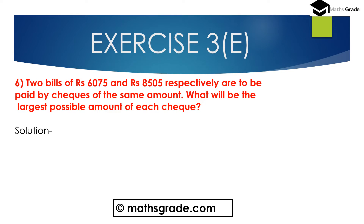Question number 6: Two bills of 6075 rupees and 8505 rupees respectively are to be paid by checks of the same amount. What will be the largest possible amount of each check? So we have to find out the largest possible amount, that is, the highest common factor of 6075 rupees and 8505 rupees.